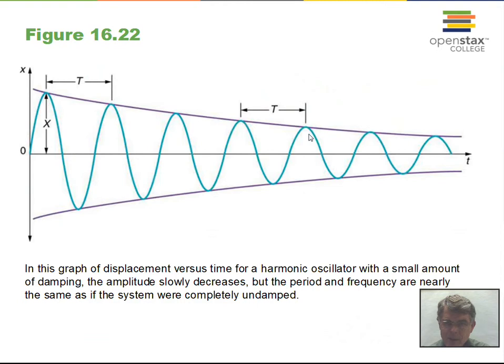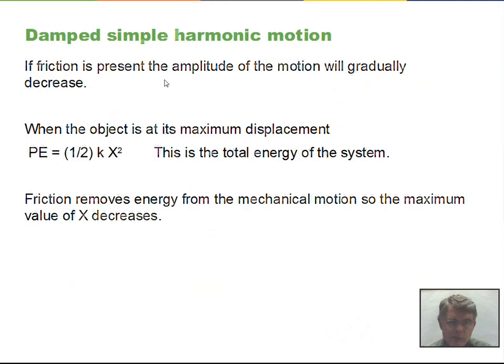Damping can be caused by surface friction or air friction, and it is not always bad. The shock absorbers in a car are designed to remove energy from the oscillation of the car body after going over rough railroad tracks — so the car doesn't keep bouncing for the next mile. Shock absorbers extract energy and restore a smooth ride.